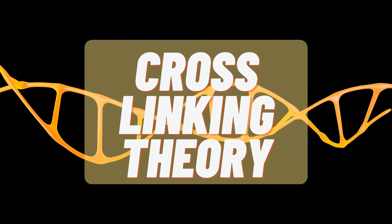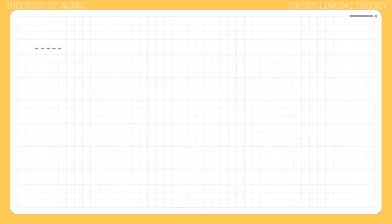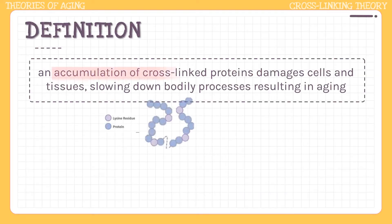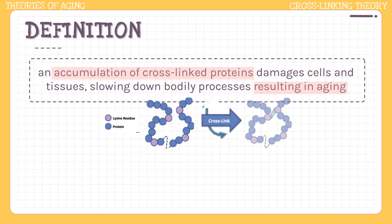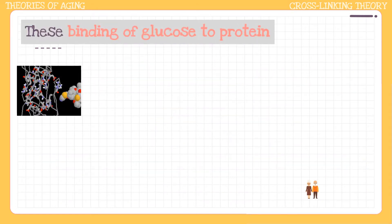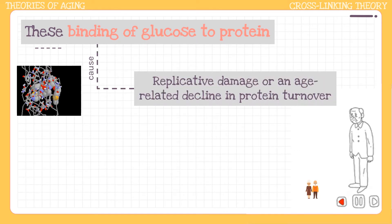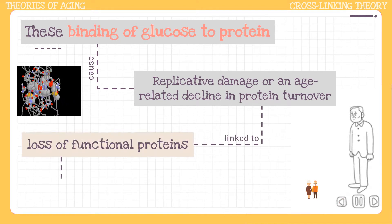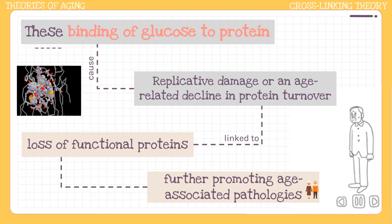Next is cross-linking theory. According to this theory, it is an accumulation of cross-linked proteins that damages cells and tissues, slowing down bodily processes and resulting in aging. It is also a process in which certain proteins in human cells interact randomly and produce molecules that get linked in such a way as to make the body stiffer. Cross-linking, which is the binding of glucose to protein, can cause replicative damage or an age-related decline in protein turnover linked to the loss of functional proteins, further promoting age-associated pathologies.